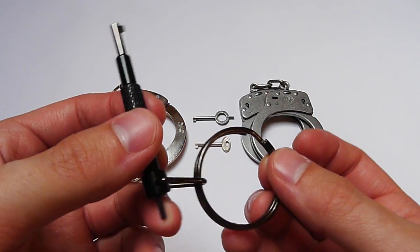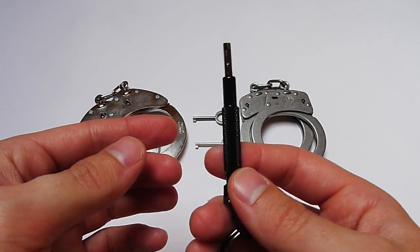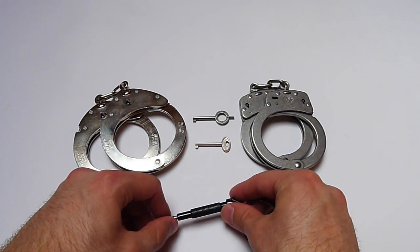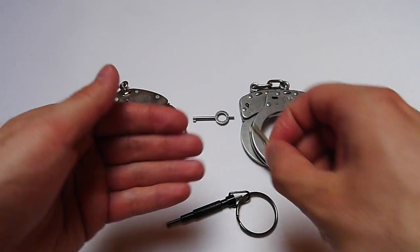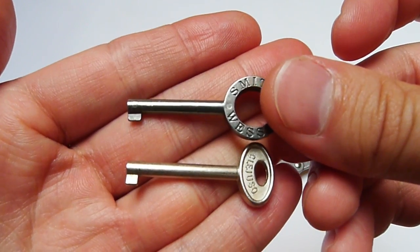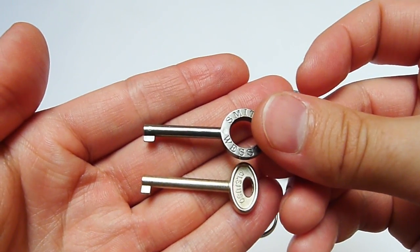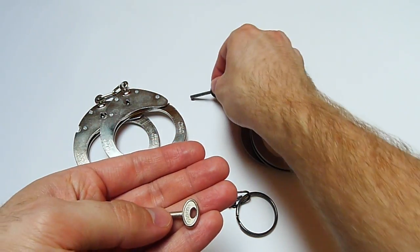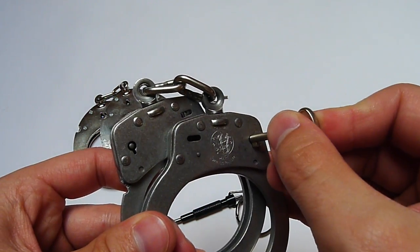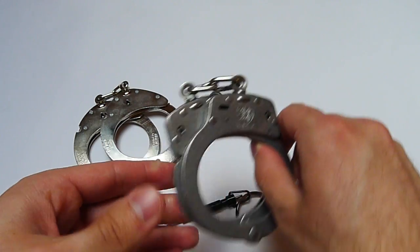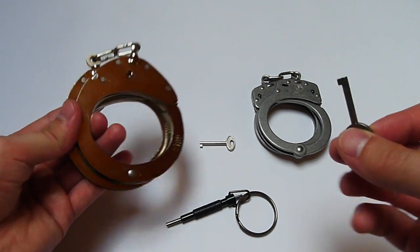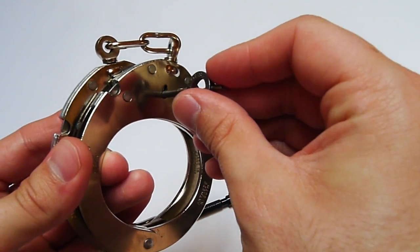Why do I like this universal handcuff key? Because if we take a look at the key for the Cleezu handcuffs and the key for the Smith & Wesson handcuffs, they're slightly different. The problem here, for example, is that I cannot open the Smith & Wesson handcuffs with the Cleezu key because they are too big. On the other hand, I can open the Cleezu handcuffs with the Smith & Wesson key. That works perfectly.